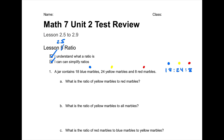What are they asking for in question A? They're asking for the ratio of yellow to red. Yellow is 24 to red, which is 8. Both of these numbers are even, so I can divide 2 into both and start to simplify. This goes down to 12 to 4. I can divide 4 into both of those one more time, and I end up with a ratio of 3 to 1.